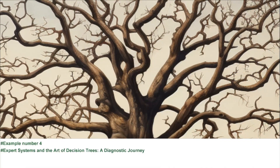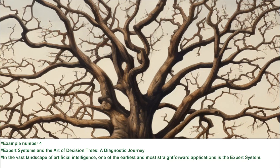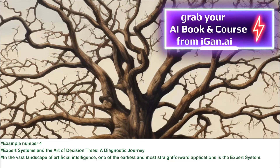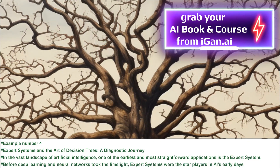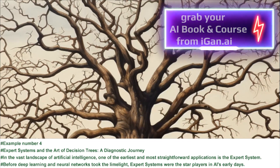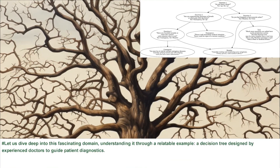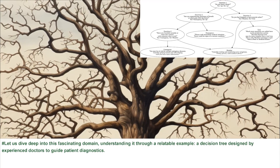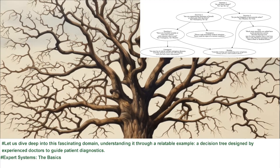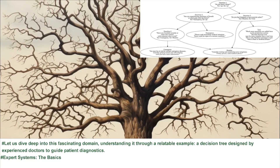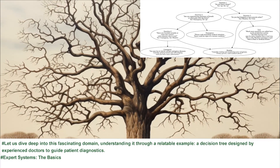Example number four: expert systems and the art of decision trees — a diagnostic journey. In the vast landscape of artificial intelligence, one of the earliest and most straightforward applications is the expert system. Before deep learning and neural networks took the limelight, expert systems were the star players in AI's early days. We'll explore this through a decision tree designed by experienced doctors to guide patient diagnostics.